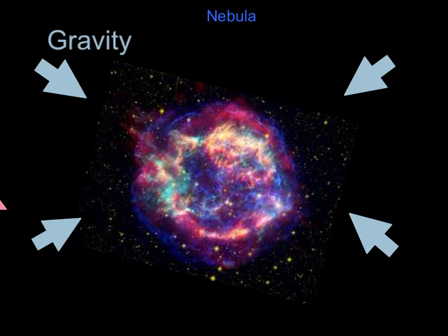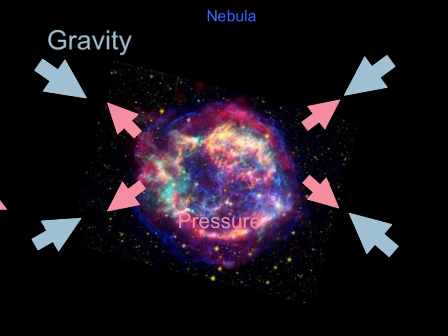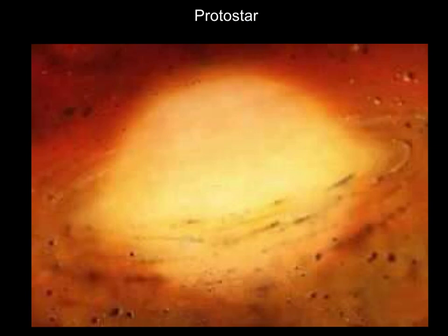This heat leads to an increase of pressure, which pushes back against the gravity, slowing the collapse of the star. This pressure is not strong enough to stop the collapse, but it will continue to increase as the nebula gets smaller and the temperature inside it gets hotter and hotter. This takes us to the next stage in the star's life cycle, where it becomes a protostar — not yet a proper star, but just a very hot cloud of densely packed gas.